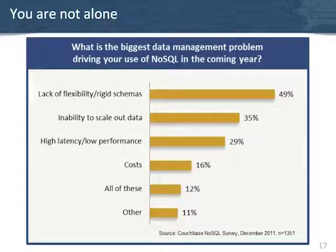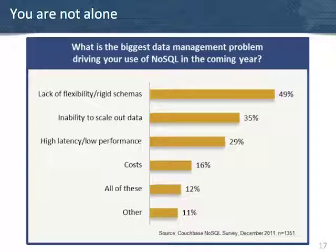We thought the number one reason NoSQL users were interested in NoSQL was scale, and number two was performance and speed. But it turns out the number one reason people get into NoSQL is because they want a flexible data model — they don't want to deal with schema migrations. That was a learning experience for us. Having happy developers is worth a lot.